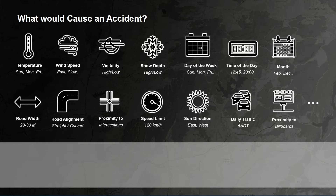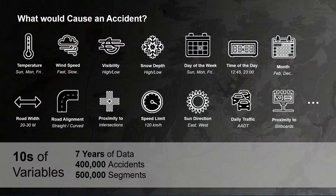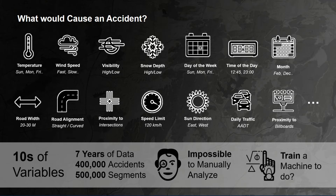In fact, we believe we are dealing with tens of variables. And the kind of data we are analyzing to train our model is really large — seven years of data, 400,000 accidents, 500,000 segments. It's nearly impossible for any human being to manually analyze this and predict, but we think we have a shot with machine learning.